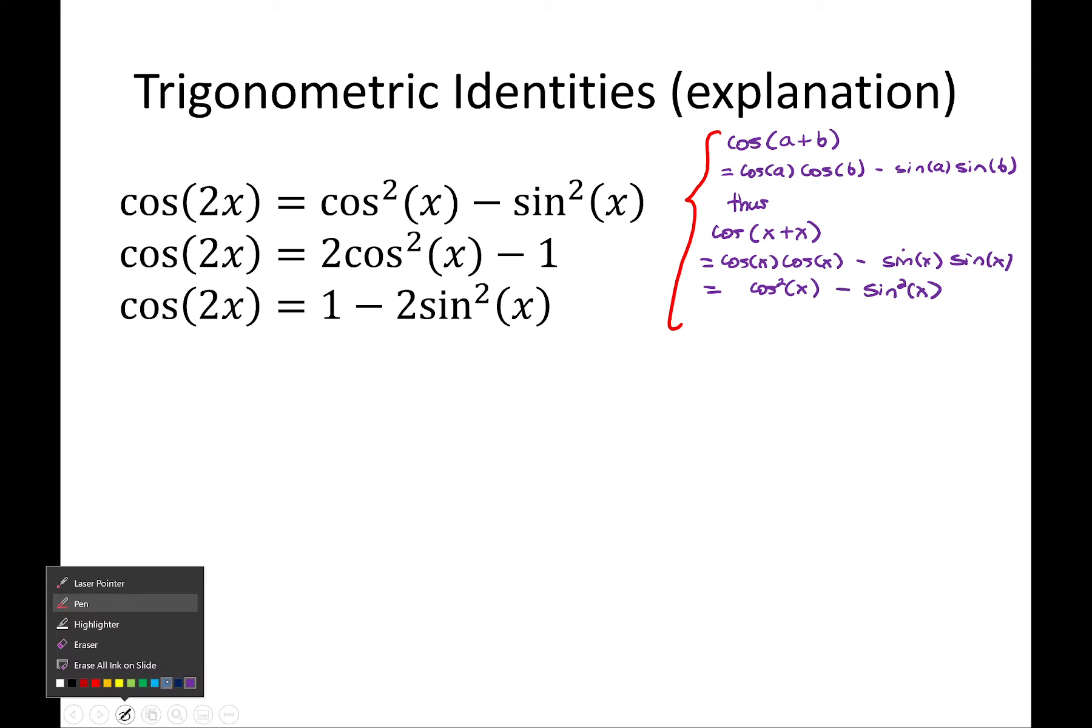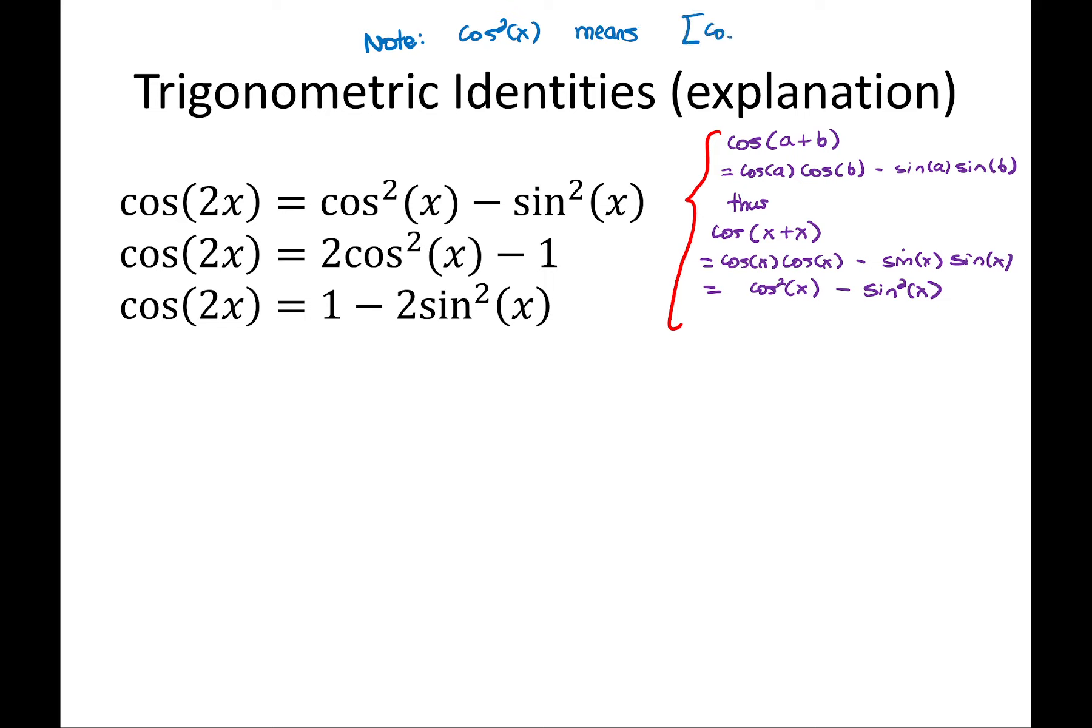A really important thing to note is that cos squared of x means cos of x all squared, cos x squared, which is not equal to cos of just x squared. You have to be really careful with notation in math. The square is being applied to the entire function, not to the argument of the function. These two functions, cos of x all squared and cos of just the x being squared, they are completely different.